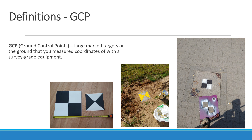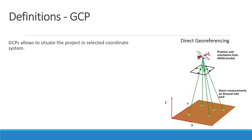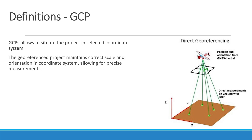GCPs are large targets marked on the ground that you measured coordinates of with survey-grade equipment. GCPs are used to geo-reference the project in a chosen coordinate system. This means that the project can be used by surveyors, architects and other engineers. It also ensures that the project has correct scale, so all the measurements on the drone mapping outputs are accurate.